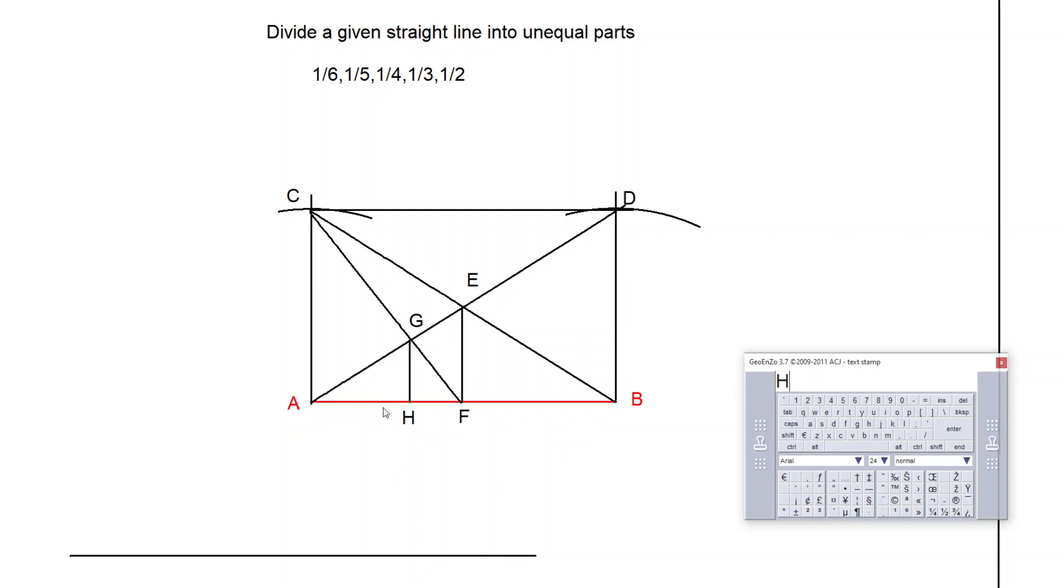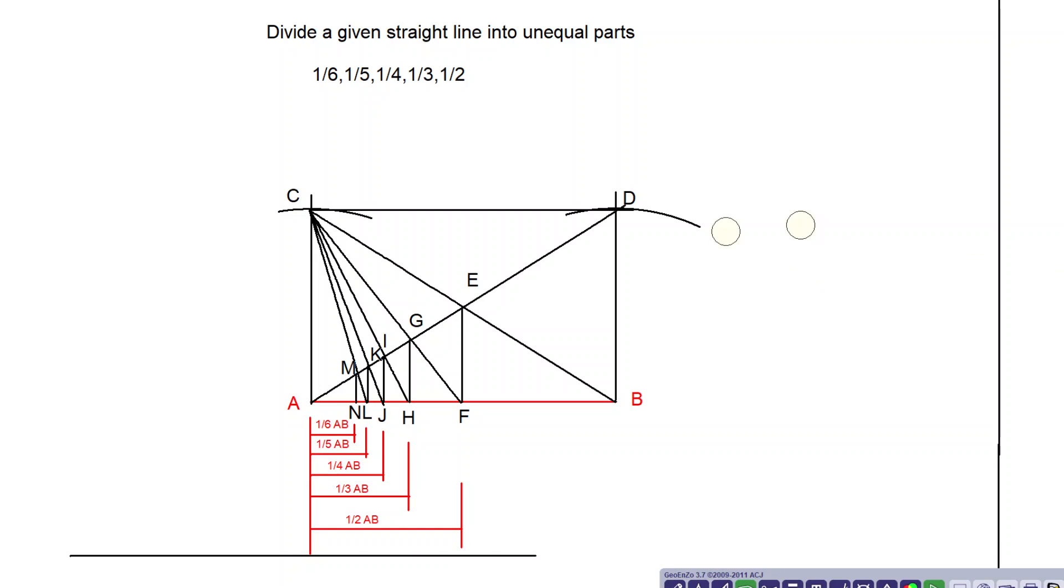Now next steps. Now we got one-third. AH is nothing but one-third of line AB. Similarly, I will find out one-fourth, one-fifth, then one-sixth. So now what I did after that? I have connected CF. It has bisected the diagonal at G. I have drawn a perpendicular.